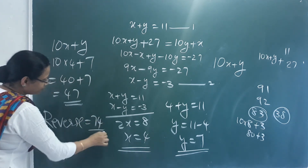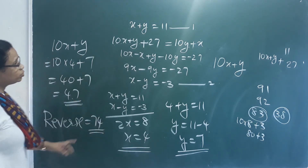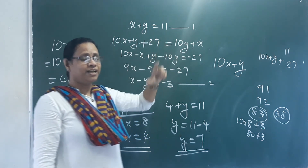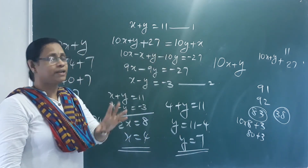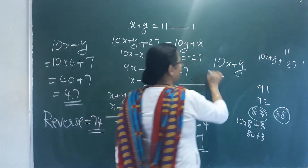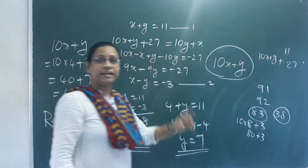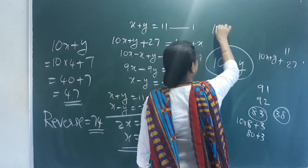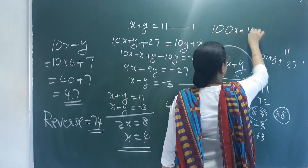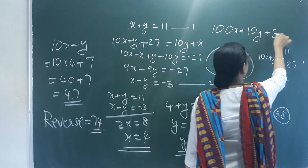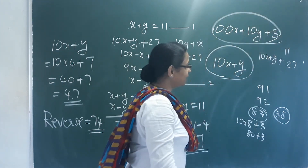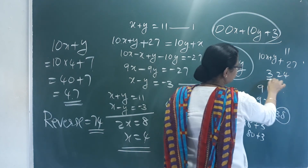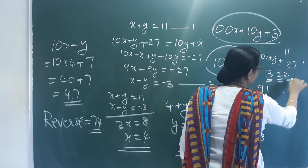If you reverse 47 you get 74, and the difference is 27 as required. If you have a 3-digit number, the standard form would be 100x plus 10y plus z. For example, 324 has 3 hundreds, 2 tens, and 4 ones.